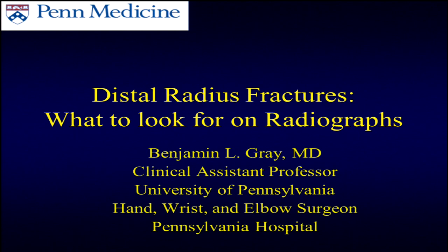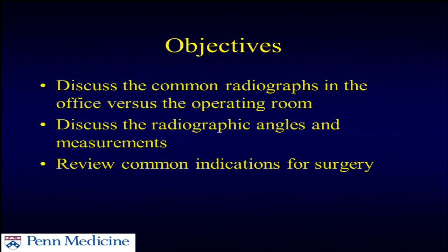Today I want to focus on some of the nuances of how radiographs are obtained, touch on complications, and cover the indications. Whether you're getting standard X-rays in your office or using a mini C-arm in the operating room, it's important to maintain the appropriate angles. We'll discuss the angles we look at when assessing whether or not a fracture is operative.